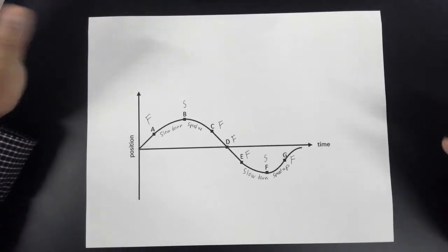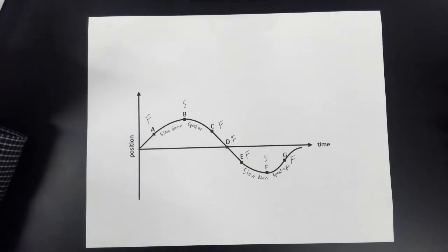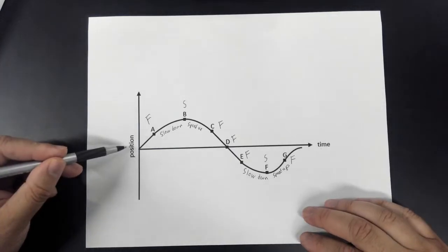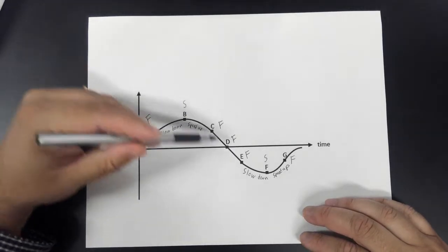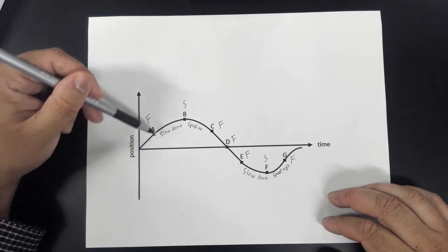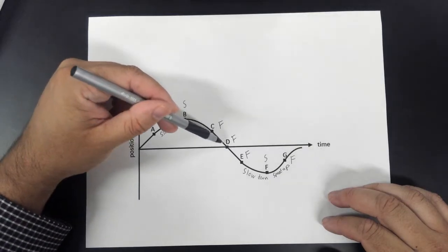One other question that you might be asked is where on this graph is it going to switch directions. In a position graph, it's pretty simple. Wherever the line switches directions, that's where the object switches directions. So right here, it was moving forward, and here it's going to switch and move back.